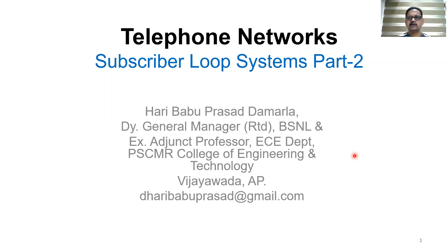This is Harivaprasad Damarla. In our earlier session we were discussing one of the subsystems of telephone networks, that is subscriber loop systems. In part one we were discussing the limiting factors on subscriber loop systems, specifically the maximum distance at which a telephone connection can be provided with reference to the geographical location of the telecom switch or telephone exchange. We have seen about the signaling limits.